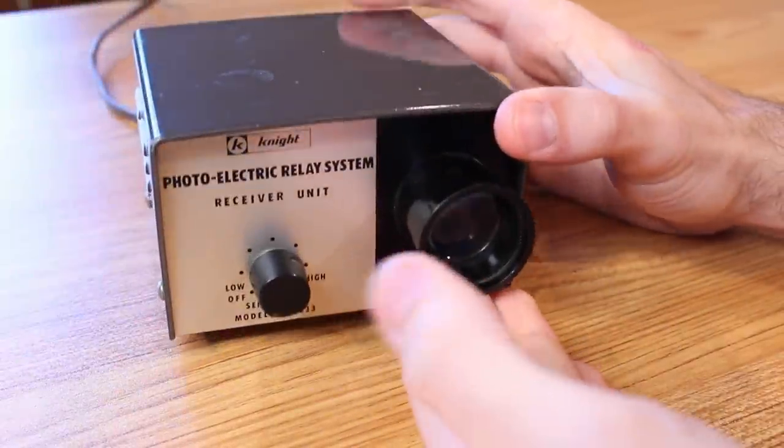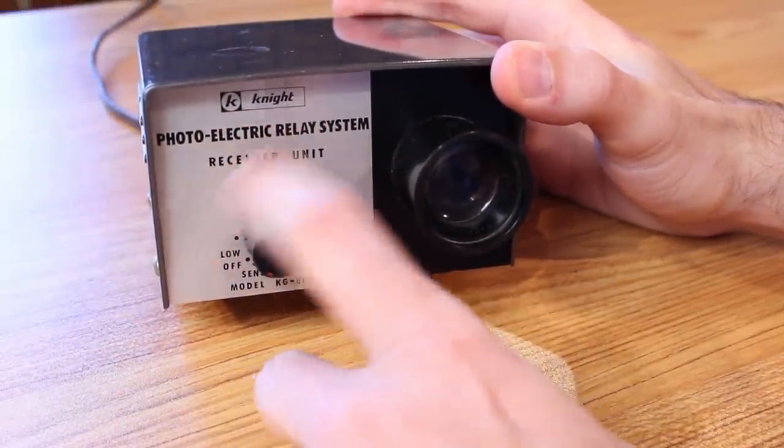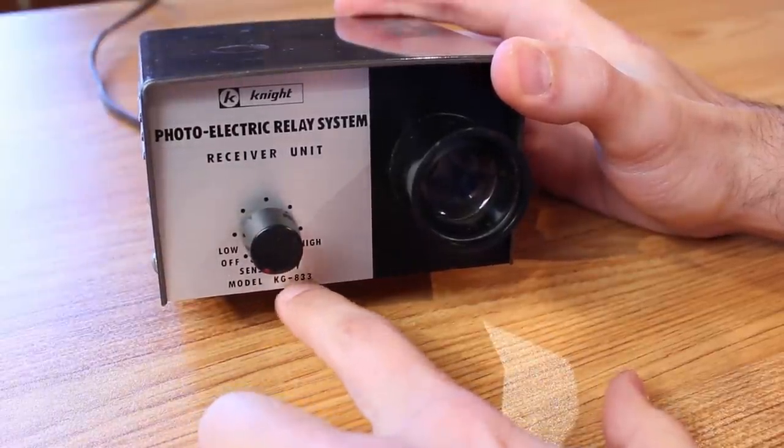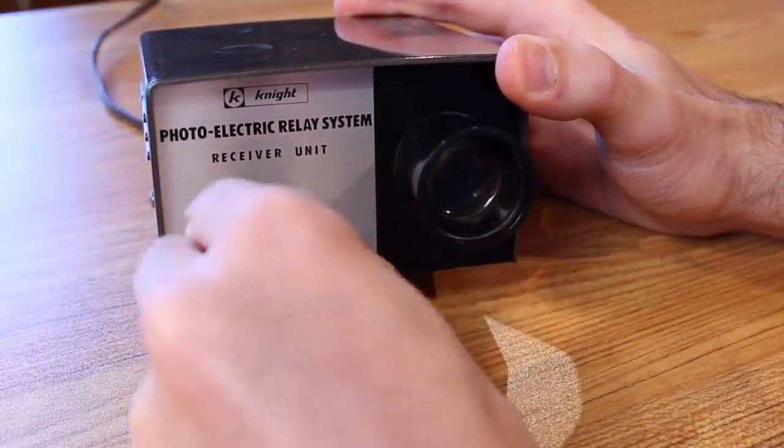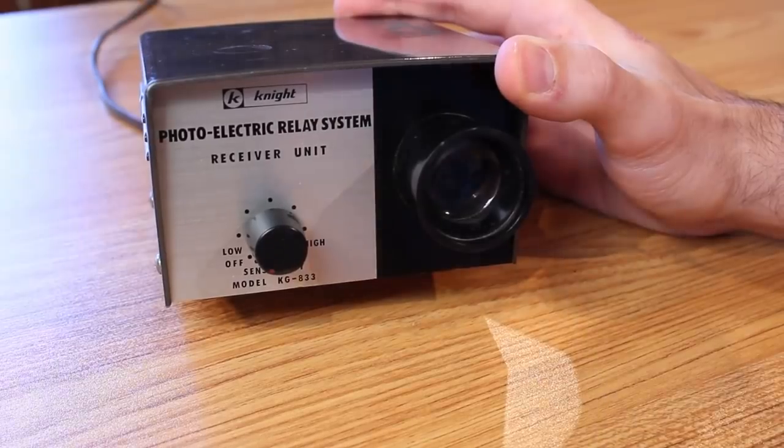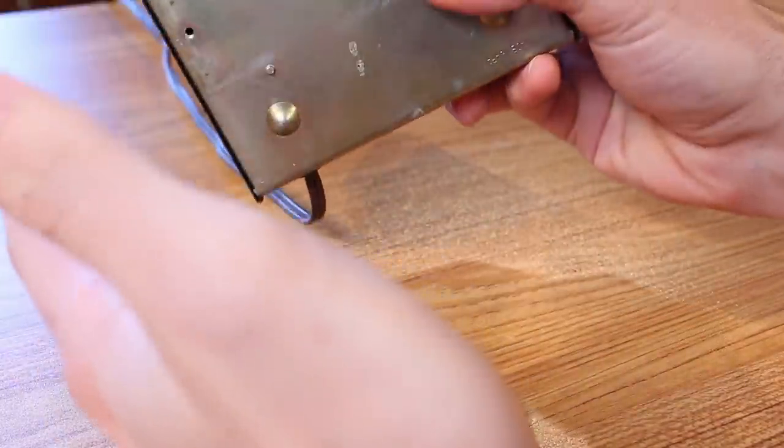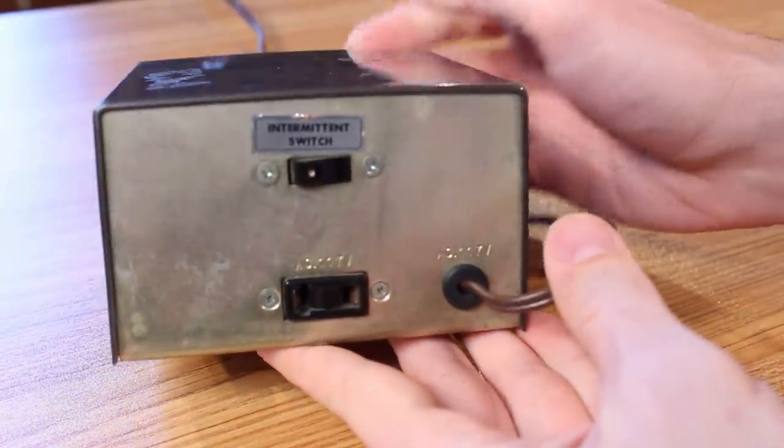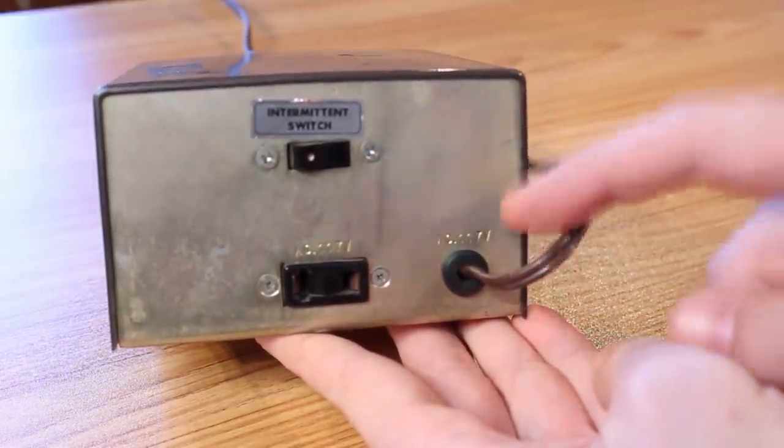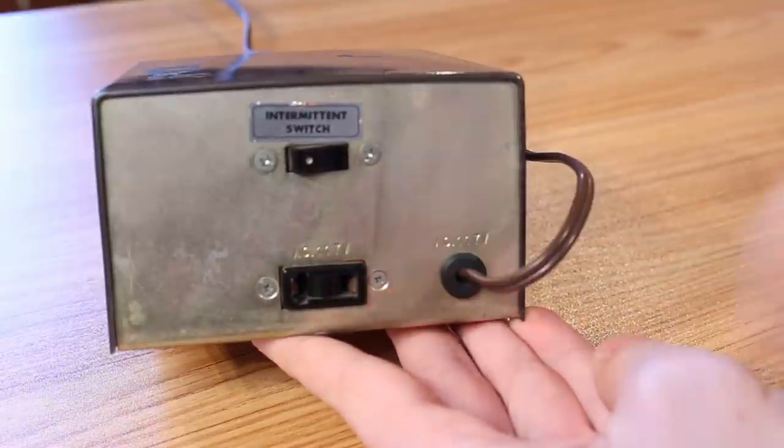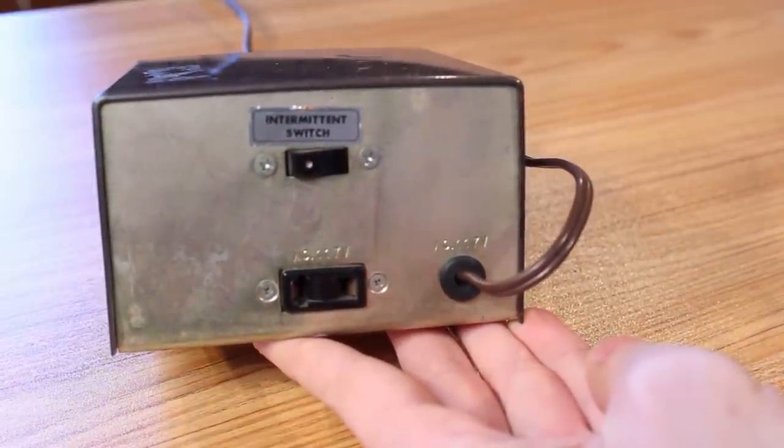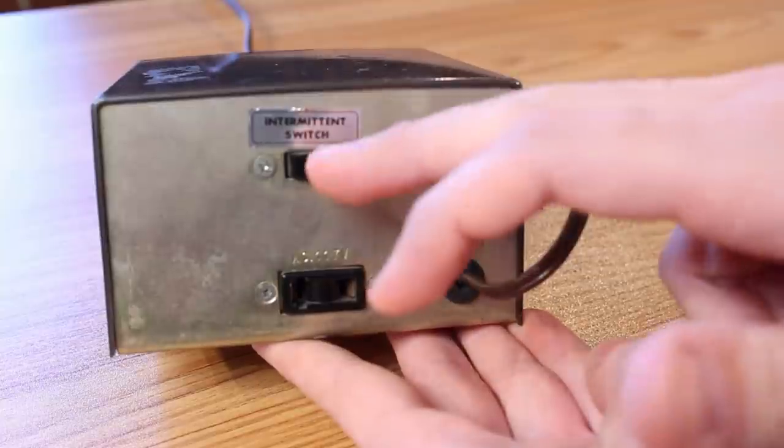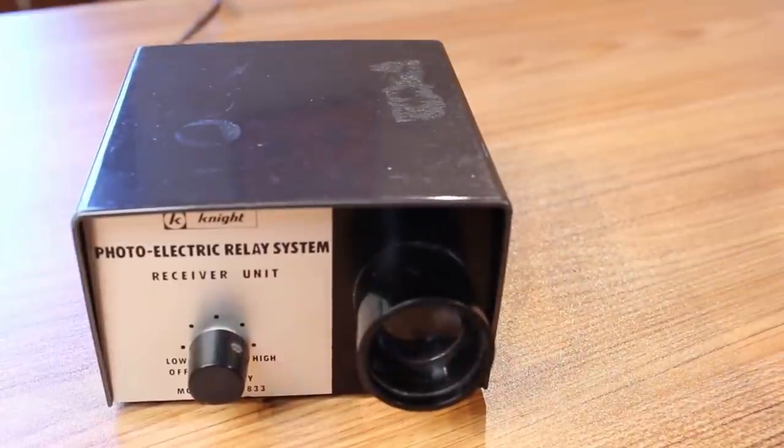All right, here's the unit itself. You can see that it's pretty spartan. It's a Knight photoelectric relay system receiver unit model KG-833, and on the front all we have is a lens and an on-off switch with a low to high sensitivity adjustment, and that's it. There's nothing on the sides, on the top, or on the bottom, but if we flip it around to the back, we get a little more clue about what's going on. We have our AC 117 volt in. This just plugs into the wall, and we have another outlet down here for AC 117 volts. So somehow AC is coming in and AC is coming out, and we're controlling that with the controls on the front, but we also have this intermittent switch up here, and its behavior is quite interesting too.